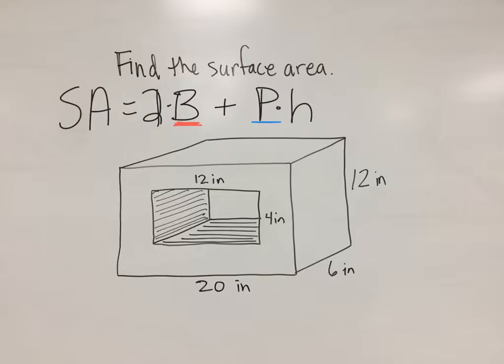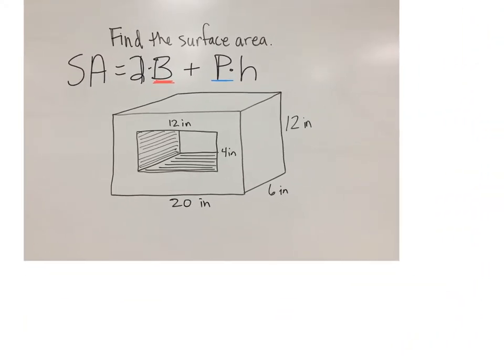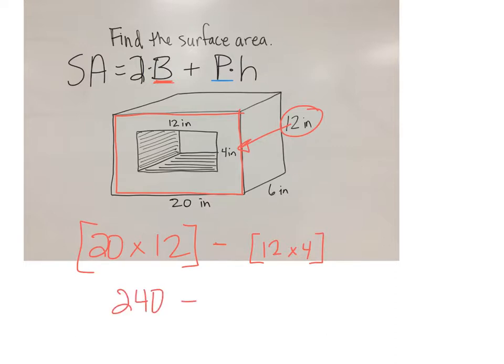The base area is going to be a subtraction problem because we are missing part of it. We have a rectangle as the base which is 20 times 12. This is our big rectangle minus our little rectangle which is 12 by 4, giving us an area of 240 minus 48, which is 192 square inches.